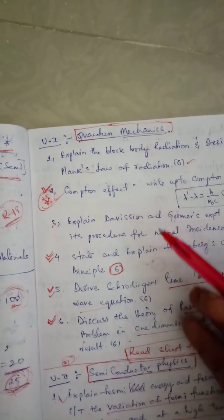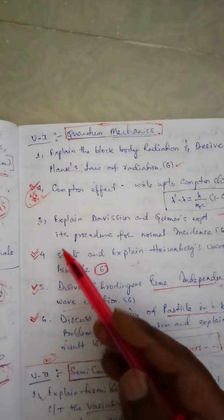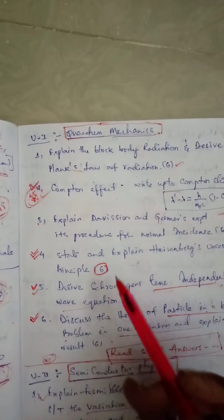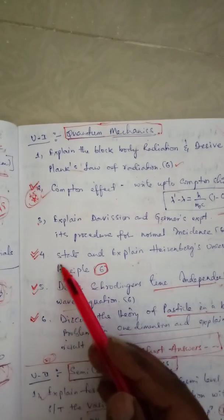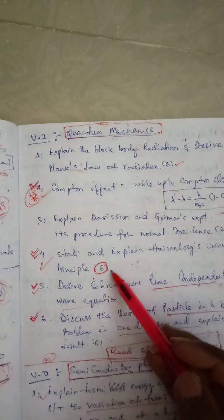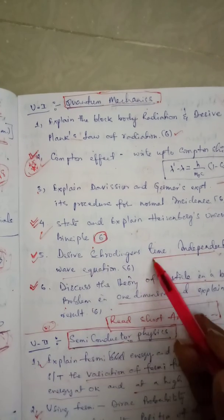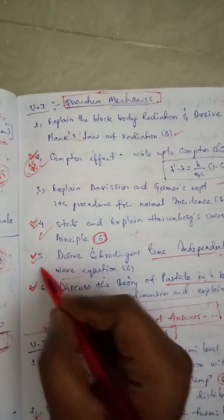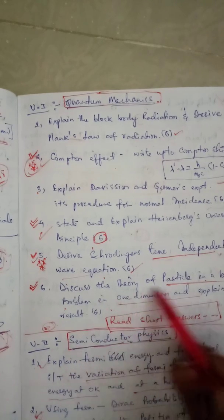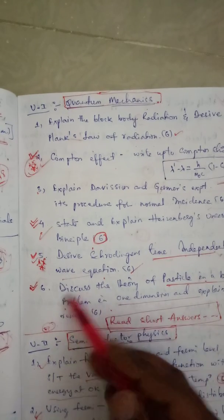The third question is 'Explain the Davisson and Germer experiment and explain the procedure for normal incidence.' The fourth question is 'State and explain the Heisenberg uncertainty principle,' which carries six marks. The fifth question is 'Derive Schrödinger's time-independent wave equation' — very very important, carries six marks — and then 'Discuss the theory of particles in a potential box and explain the results.'